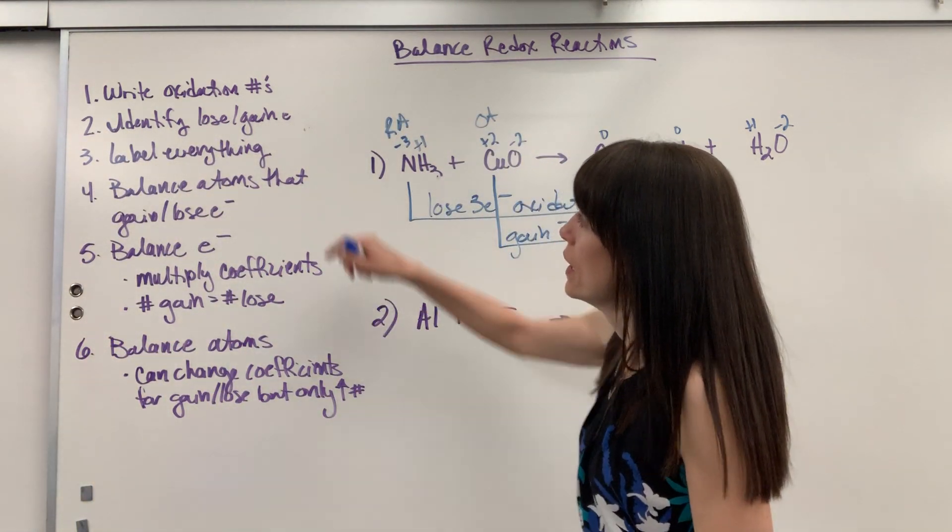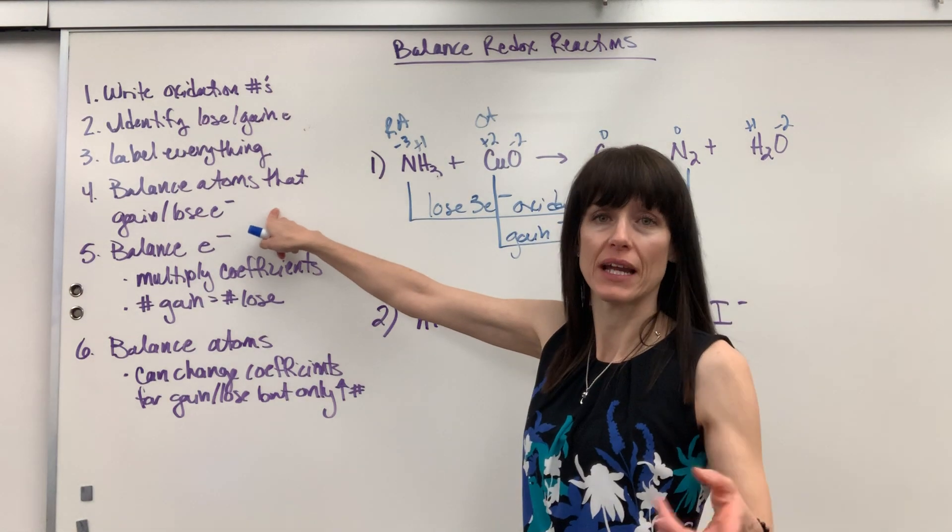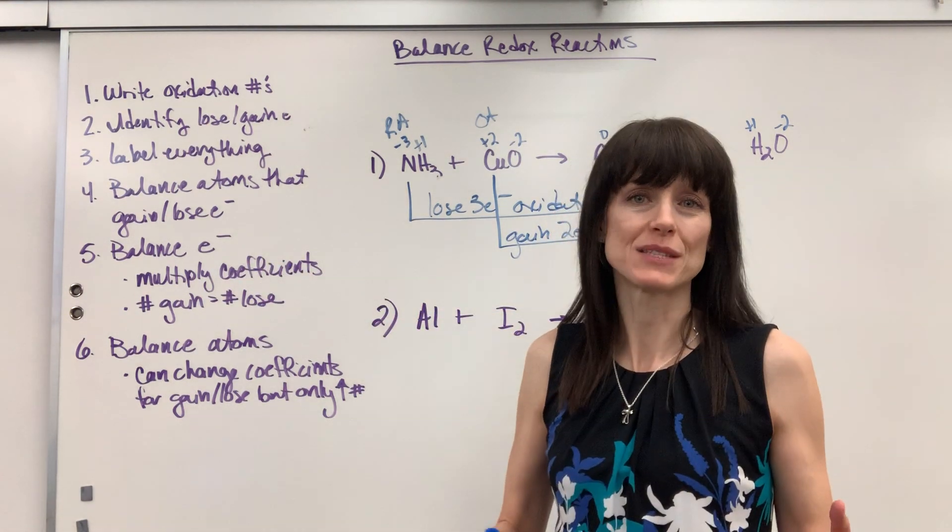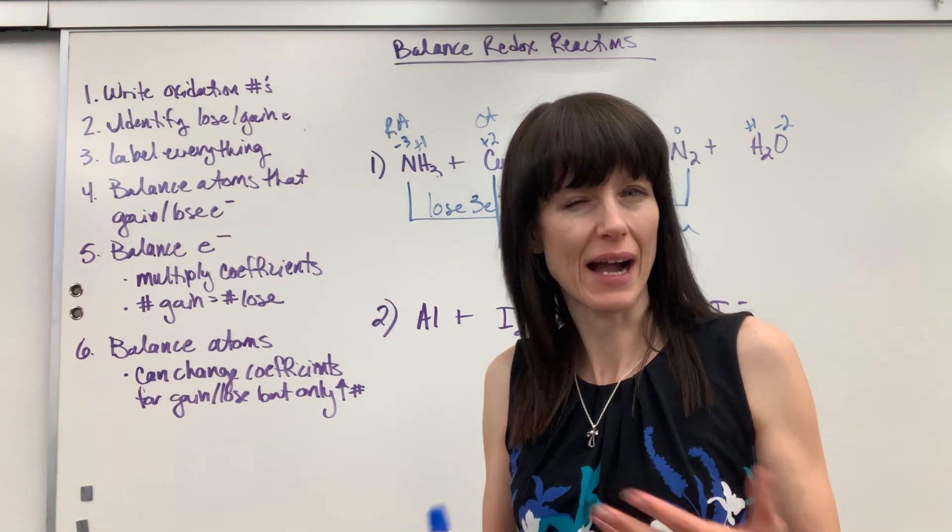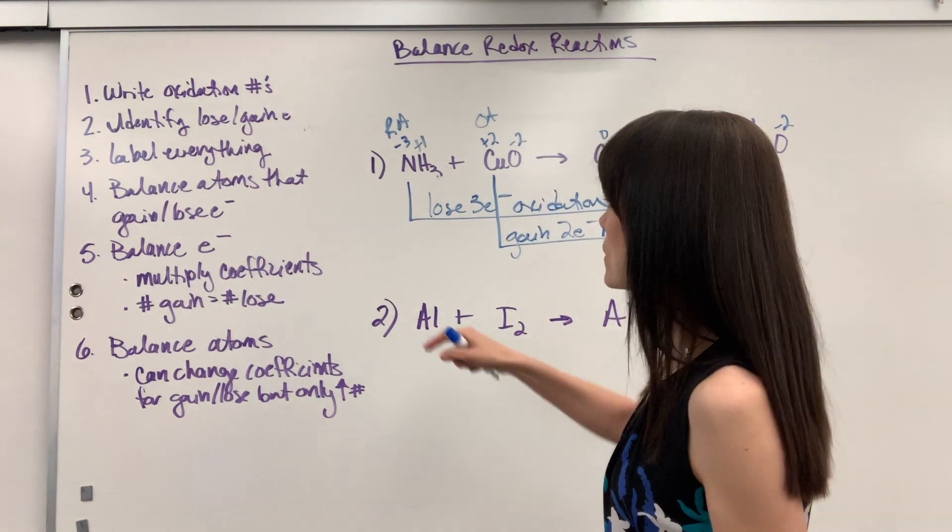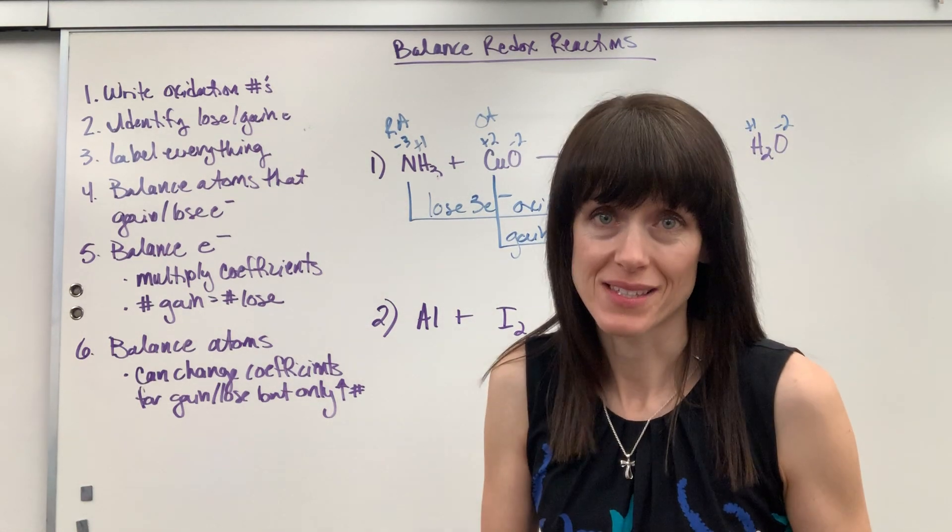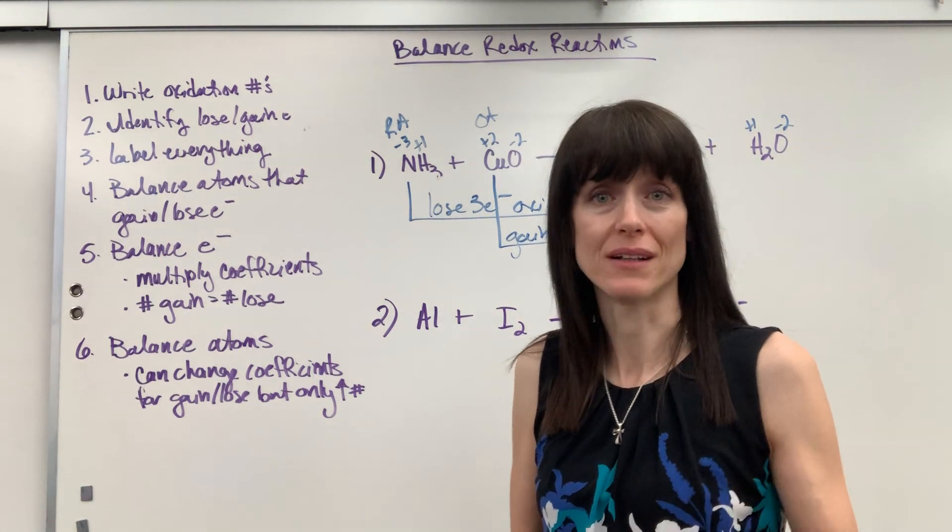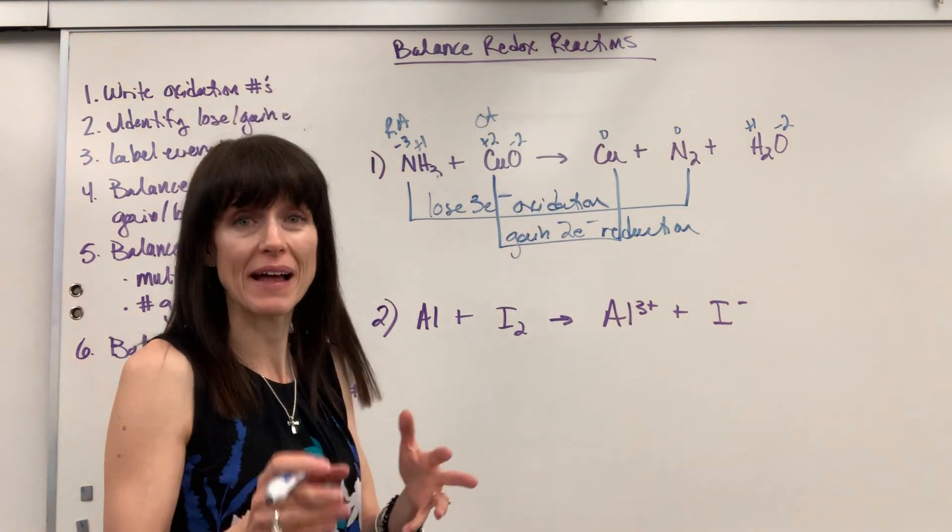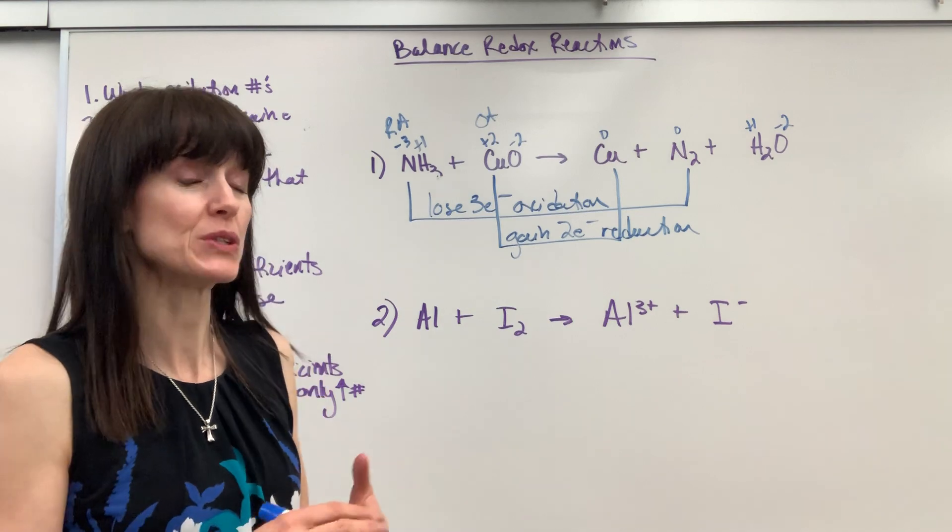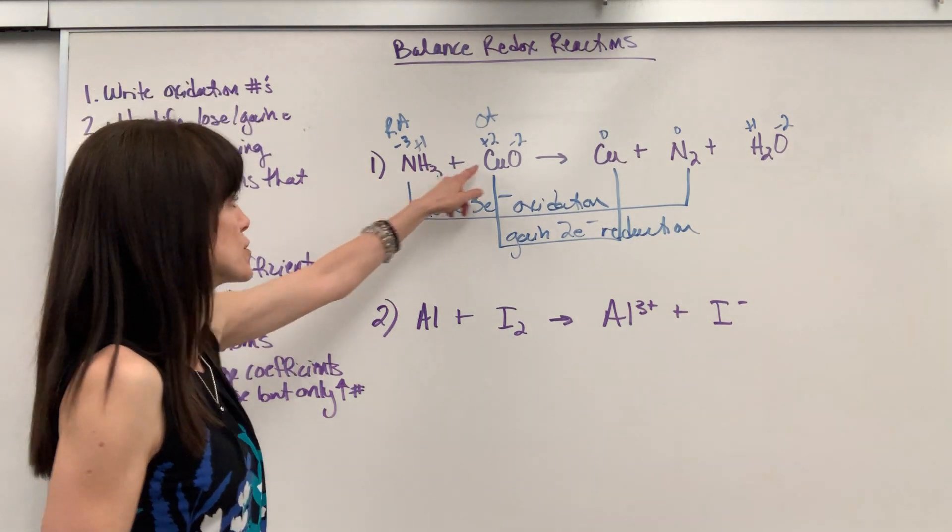Okay, we got it labeled. Now step four: balance the atoms that are gaining losing electrons. This is important. You'll only see this maybe like 10 percent of the time that you actually have to do this. Most of the time it'll just be one atom one atom. If it's not though, you can't get the right answer unless you balance those atoms first. So the two atoms that I have to balance before we do anything else are the nitrogen and copper.